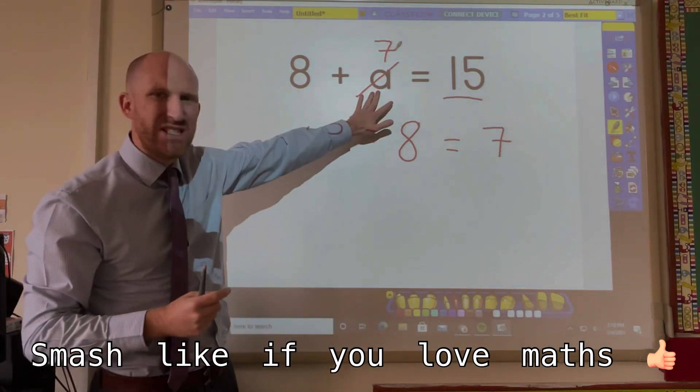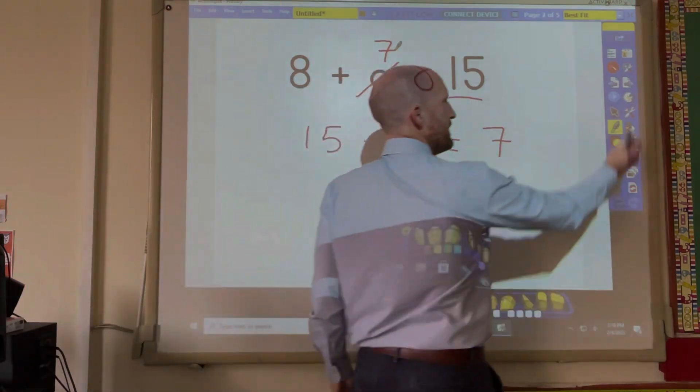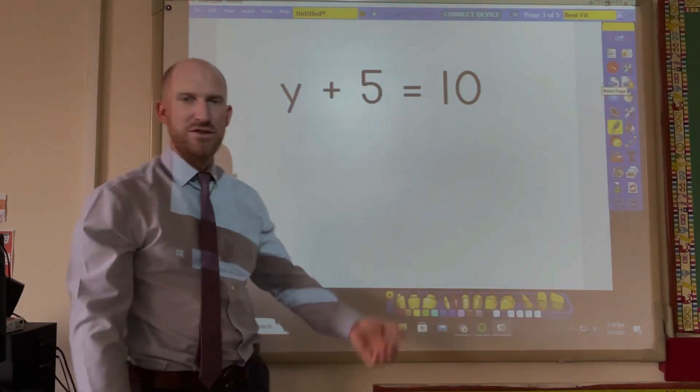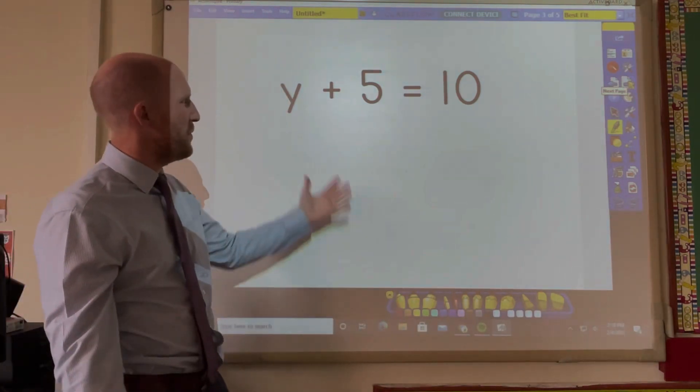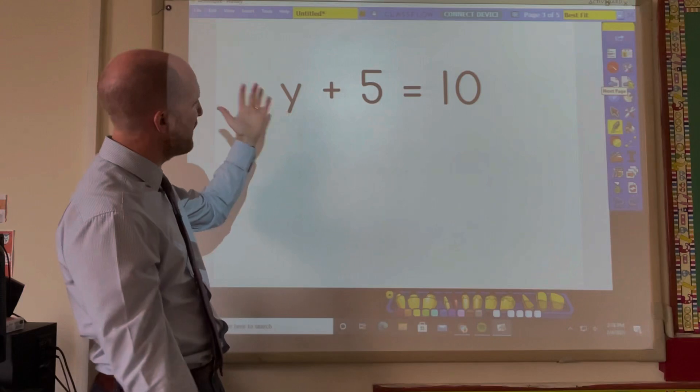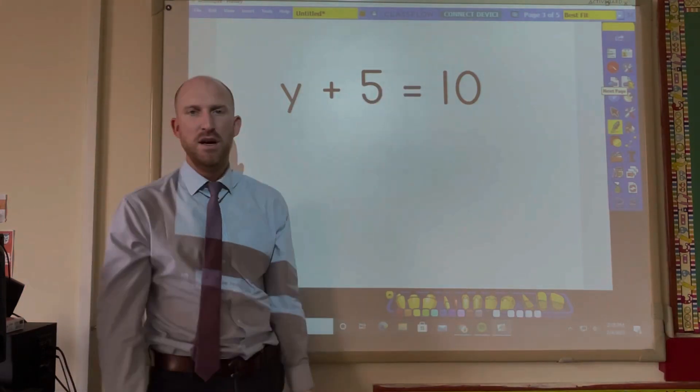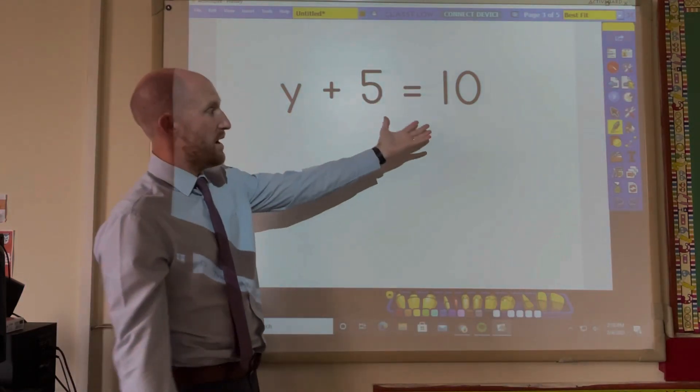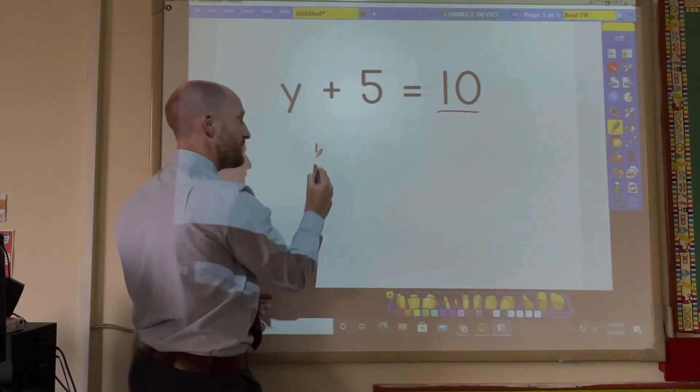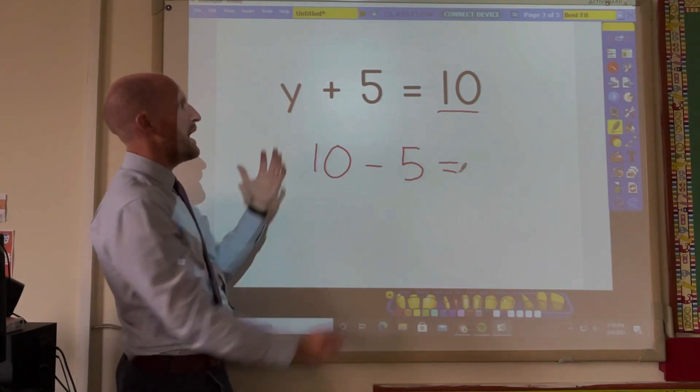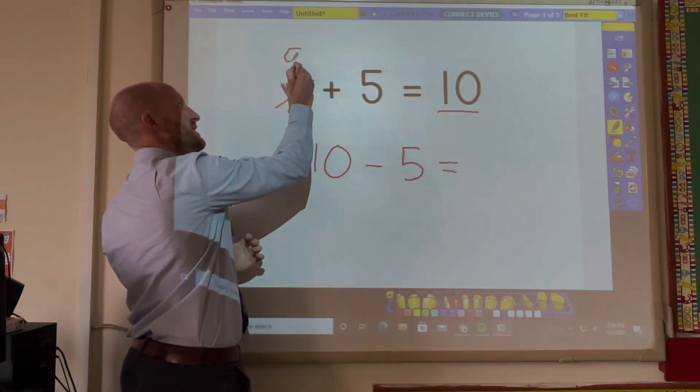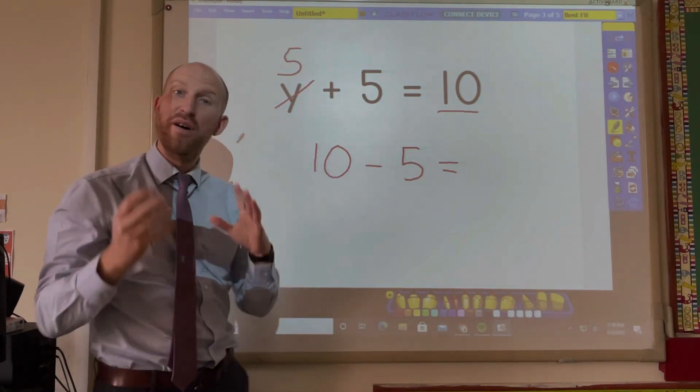Now it's not just the letter A in algebra. It can be any letter. It can be A, B, C, D, E, F, G. It can be all of the letters of the alphabet. Like look at this example here. We have Y plus 5. So I know the answer is 10. I can take away 5. And I can find out that Y is representing number 5.